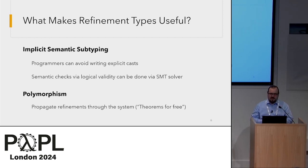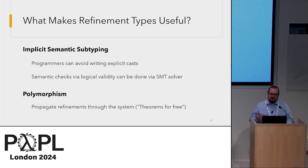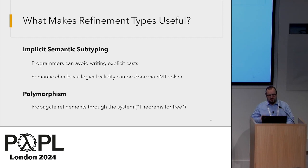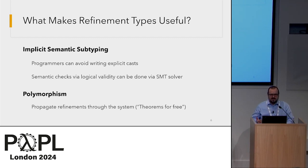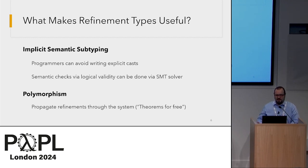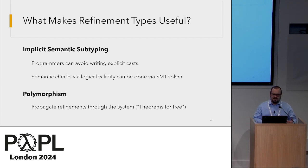What makes these refinement types useful? Our implementation of system RF has two main features. Semantic subtyping is important because programmers want to avoid writing explicit casts — it makes the system much more useful. Checks that arise for function calls can be turned into semantic checks and passed off automatically, for instance to an SMT solver. And with polymorphism, refinements can propagate throughout the system — think theorems for free — giving us a lot of benefit.